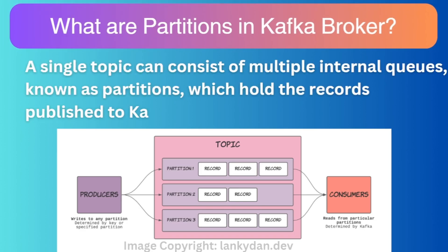The next question is: what are partitions in a Kafka broker? A single topic can consist of multiple internal queues known as partitions, which hold the records published to Kafka. Topics are stored as log files on disk, and since disk size is finite, there is a limit on how many messages can be stored — which can become a bottleneck for scaling. So to scale out, Kafka gives us the option to break a single topic into multiple partitions that can reside on multiple nodes in distributed form. Partitions are the backbone of Kafka's distributed nature.